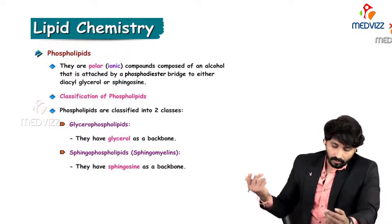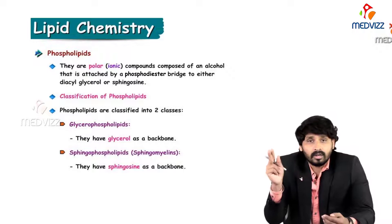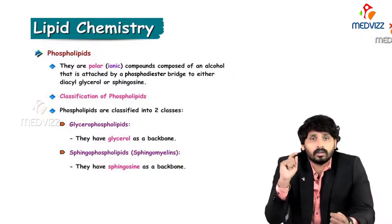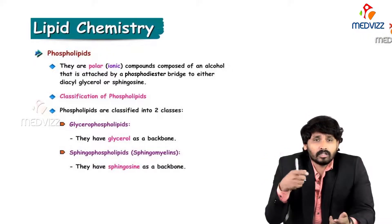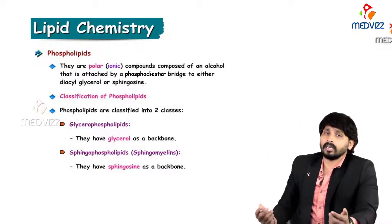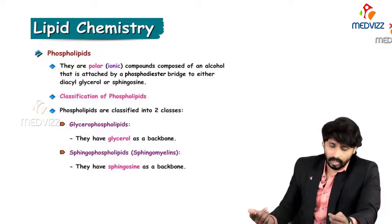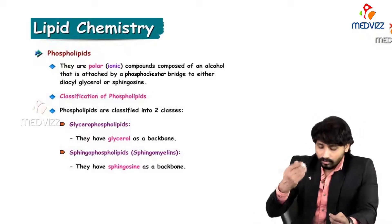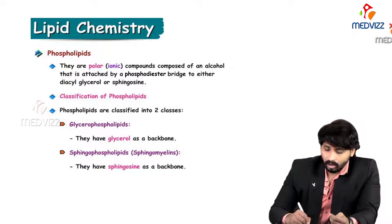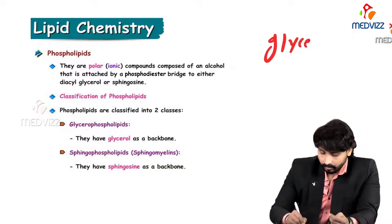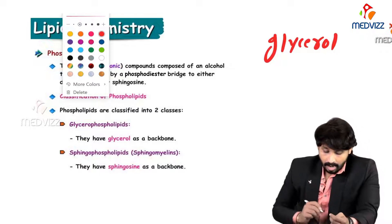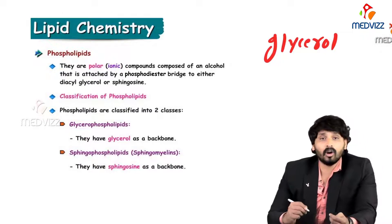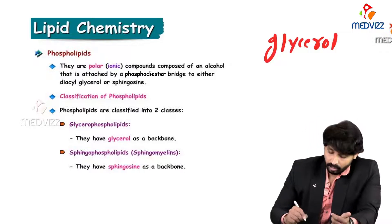Classification of phospholipids: there are two major classifications. One is glycerophospholipid, and the other one is sphingophospholipids. With the name itself we can make out — glycerophospholipids have alcohol glycerol as their backbone, while in the case of sphingophospholipids, the alcohol is other than glycerol, that is sphingosine.